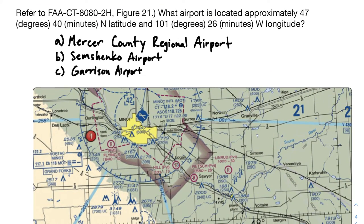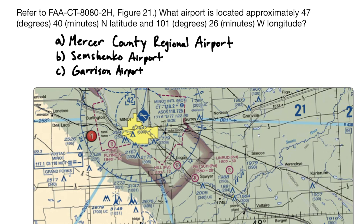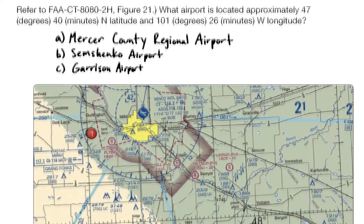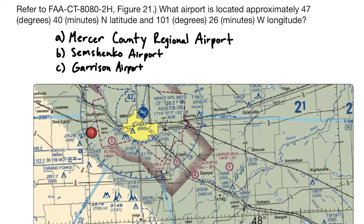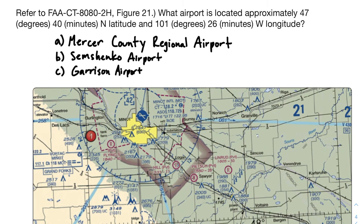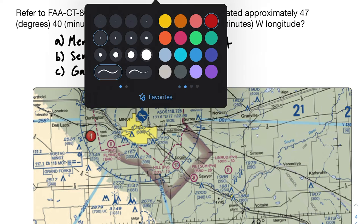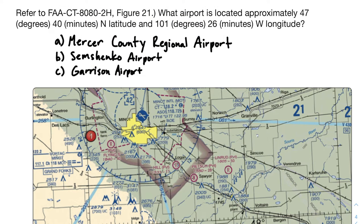Using what we've learned, let's look at the next problem: what airport is located at approximately 47 degrees 40 minutes north latitude and 101 degrees 26 minutes west longitude? I want to give you the opportunity to solve it before I do, so I've linked the figure in the description box — feel free to try it on your own. Then come back to this video and check your answer. I'm going to skip looking at the answer choices first so my reasoning isn't tarnished by the available options.